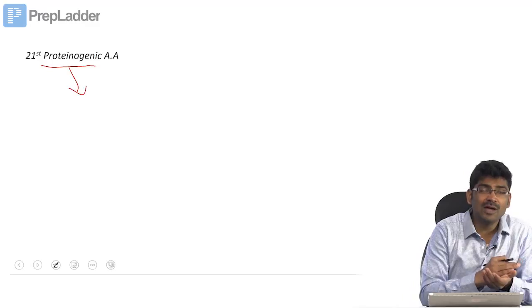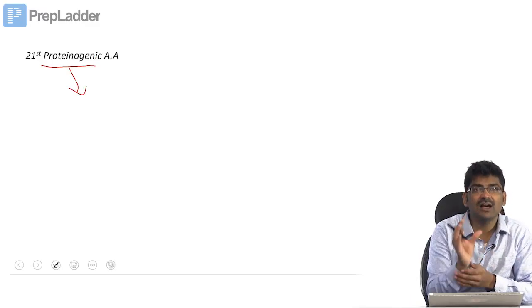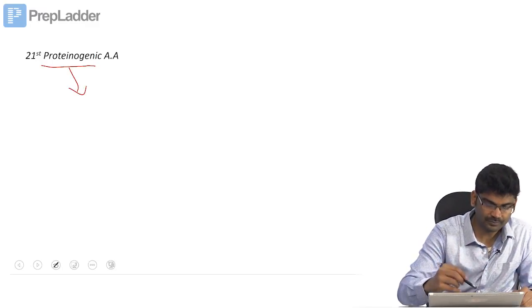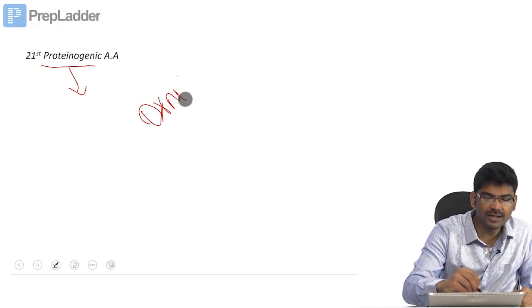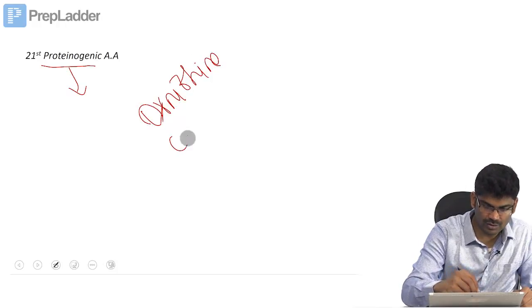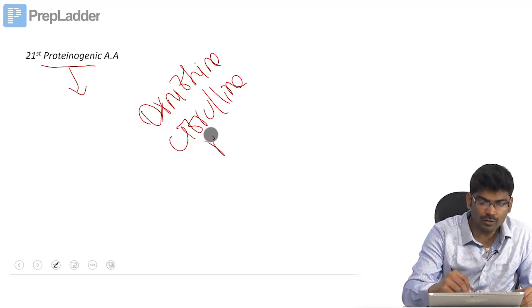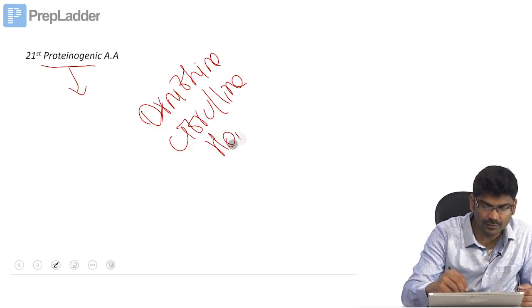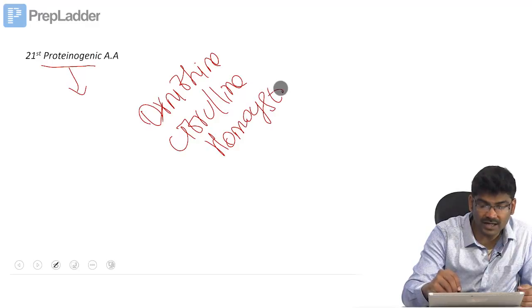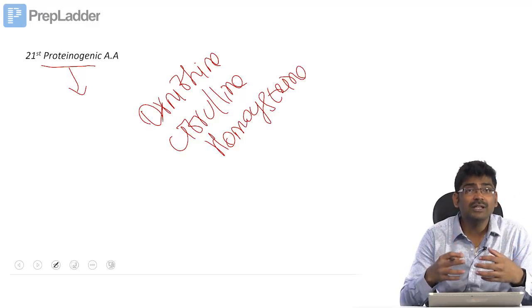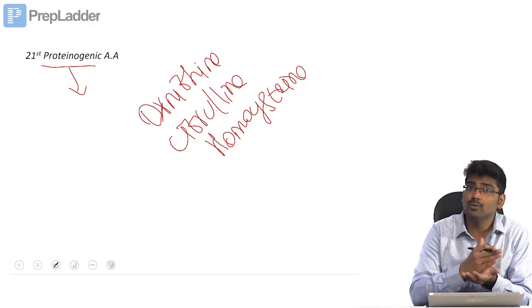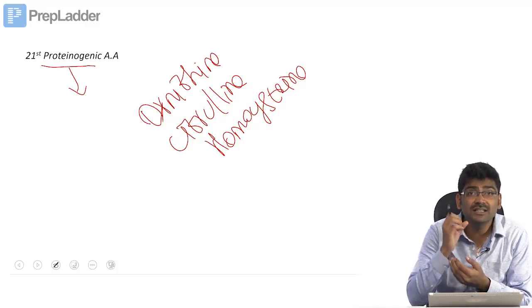Moreover, this amino acid has a specific tRNA. If you see ornithine, citrulline, and homocysteine, these are also amino acids. They are found in the blood. They are usually not found in proteins and they do not have a specific tRNA.